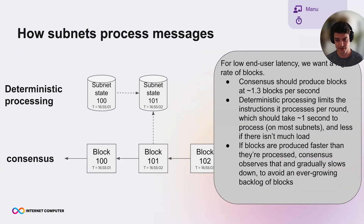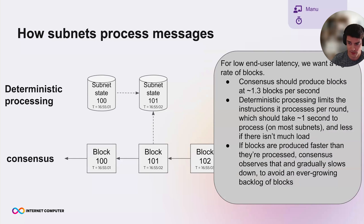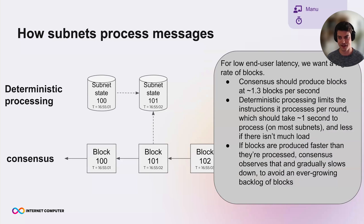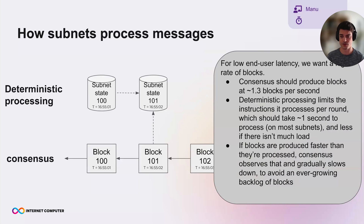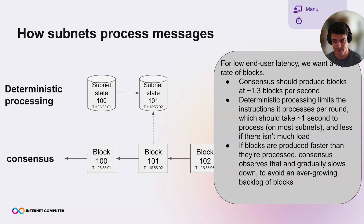We want all of this to be fast and low-latency. Consensus tries to produce blocks quickly — on most subnets it aims for about 1.3 blocks per second. This means deterministic processing should be able to keep up, otherwise we have an ever-growing backlog of blocks. Deterministic processing limits how much work it does in one round using instruction counts, targeting roughly one second under load.